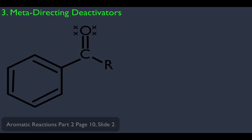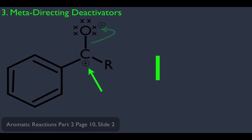We have to think about the inductive and the resonance effect and figure out the overall effect. To do that, let me first draw a possible resonance structure. One move I can make is take these pi electrons and have them jump up on the oxygen. This places a positive charge on the carbon directly connected to the benzene ring. Because that carbon is positively charged, it attracts electrons through the sigma bond, pulling electrons away from the benzene ring. So this substituent has a withdrawing inductive effect.